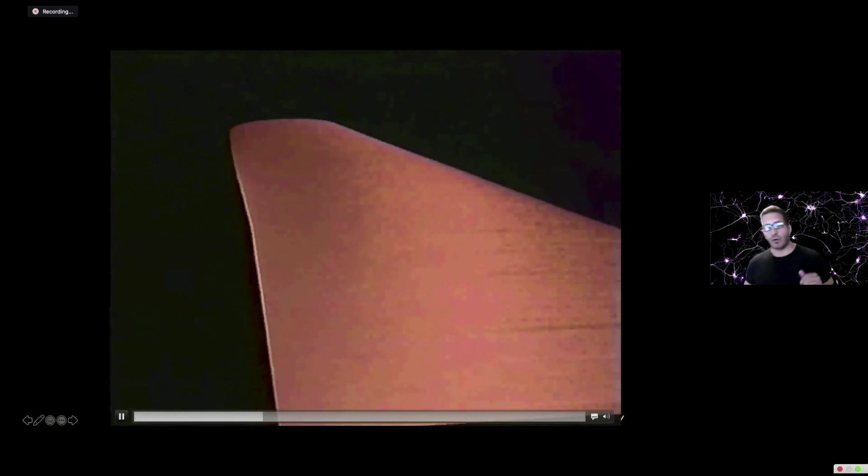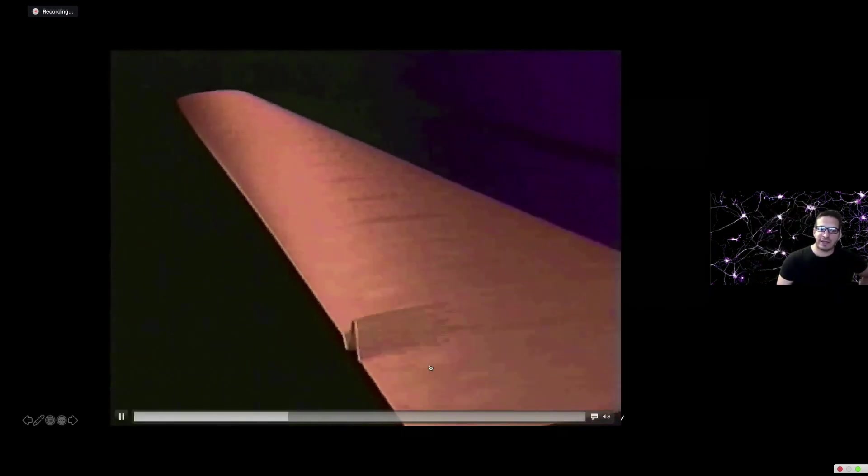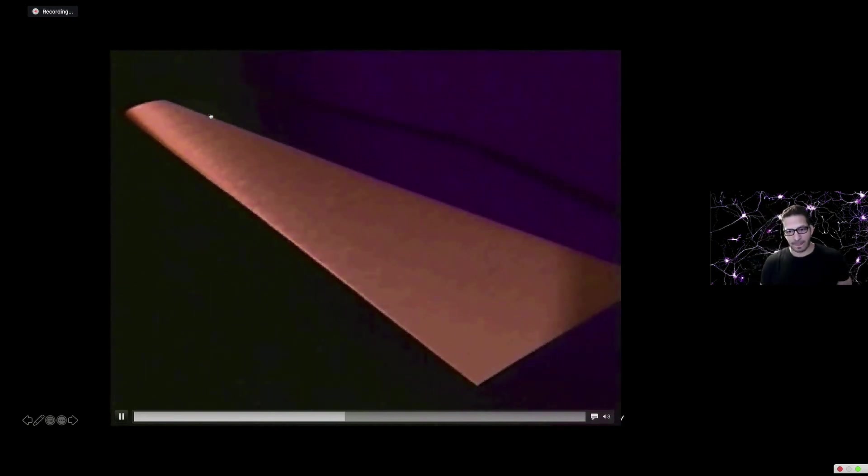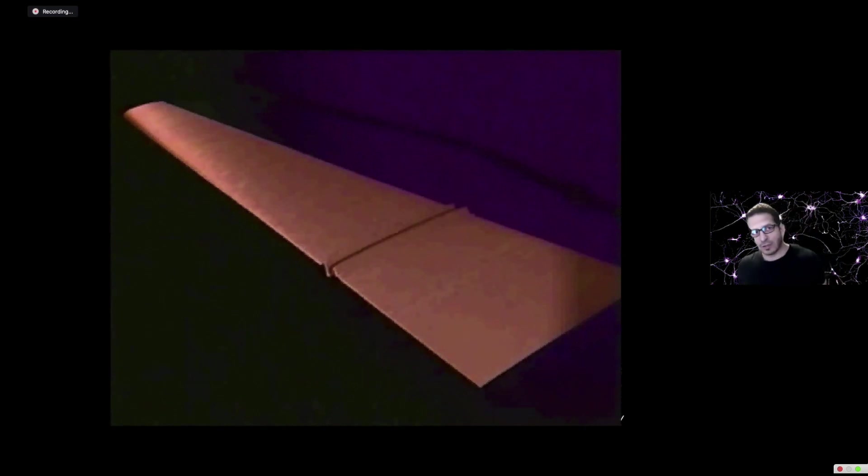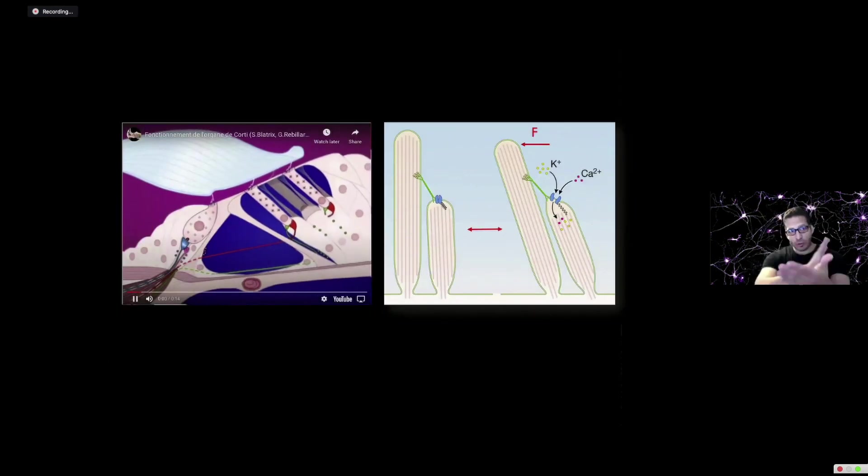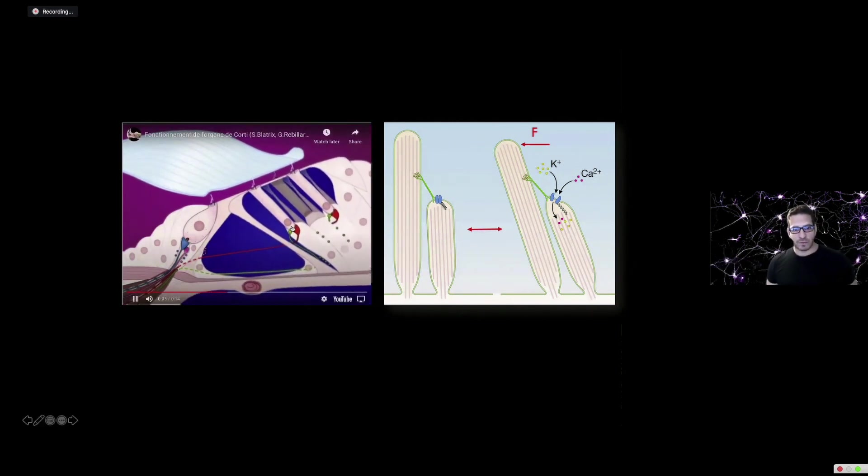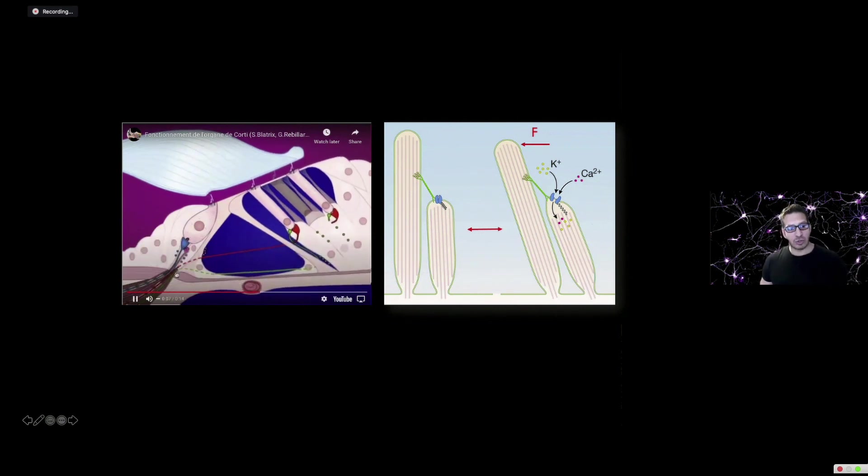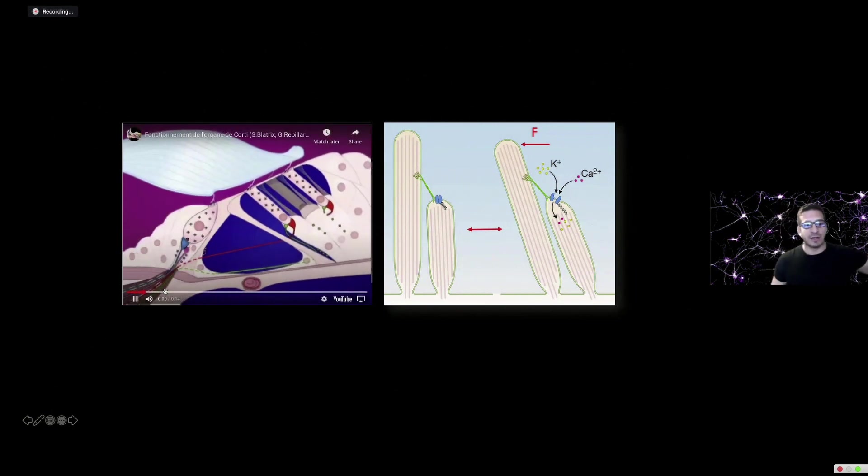If you unwrap the cochlea and look at it as a line instead of a spiral, it's actually graded in stiffness. It's looser on one end and stiffer on the other so that different frequencies vibrate at different regions. As it moves up and down, it causes these little hairs to move back and forth. When they move, that stretches open a mechanosensitive channel that allows ions to move into the cell. That sends an electrical signal to the brain.